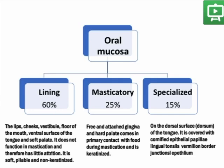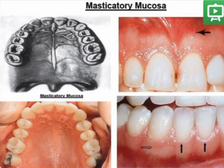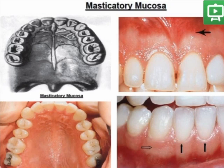The specialized oral mucosa constitutes 15% of the total surface on the dorsal surface of the tongue, which is covered with cornified epithelial papillae, along with lingual tonsils, the vermilion border of the lip, and the junctional epithelium. The masticatory mucosa — the hard palate and attached gingiva — are marked with black arrows. This gingiva is more whitish in color, referring to the keratinization taking place.